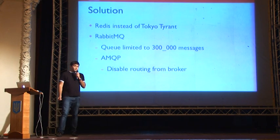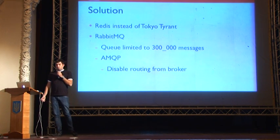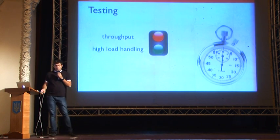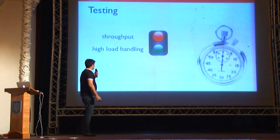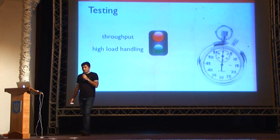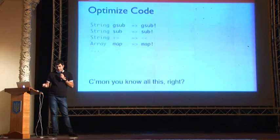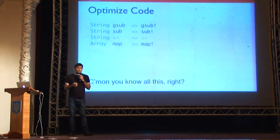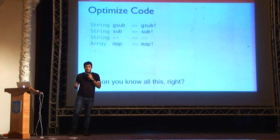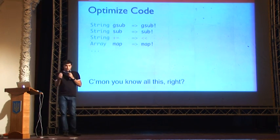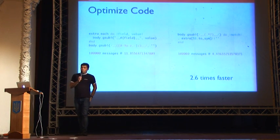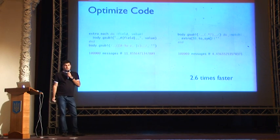The solution was to replace Tokyo Tyrant with Redis and limit the RabbitMQ queue to 300,000 messages. We passed high load testing, but still didn't meet the required throughput. So we started optimizing code — the key principle being not to create unnecessary objects: fewer objects means less garbage collector work. After optimization we had code that was two and a half times faster than before, but it still wasn't enough.